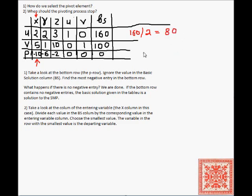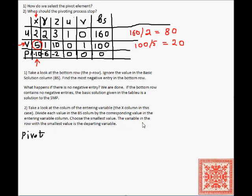160 divided by 2 equals 80, and 100 divided by 5 equals 20. So v is our departing variable because 20 is the smallest value. V is replaced by x — it temporarily gets out of the solution. Five is the pivot: that's the intersection of the departing and entering variable cells. Now we have to do the pivoting, which is a linear algebraic operation we covered in the previous screencast.